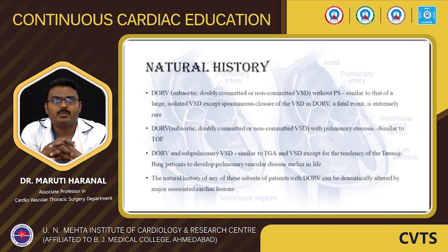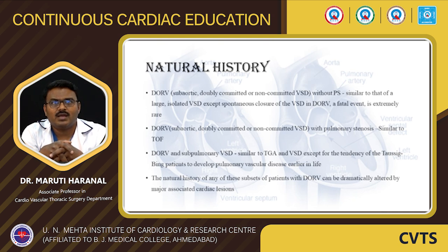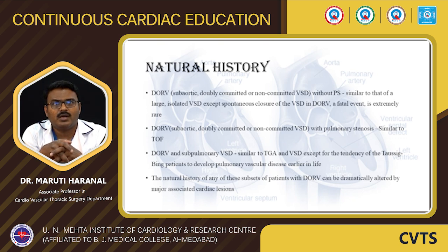DORV with subaortic, doubly committed, or non-committed VSD without pulmonary stenosis has a natural history similar to that of an isolated VSD, except that spontaneous closure of the VSD in DORV is extremely rare and is a fatal event. DORV with subaortic, doubly committed, or non-committed VSD with pulmonary stenosis has a natural history similar to Tetralogy of Fallot. DORV with subpulmonary VSD is similar to TGA with VSD, except for a tendency to develop pulmonary vascular disease earlier in life. The natural history of any subset of DORV patients can be dramatically altered by major associated cardiac lesions.